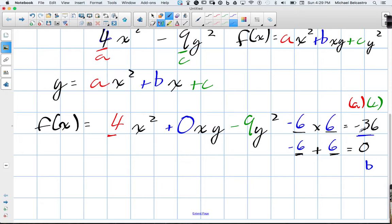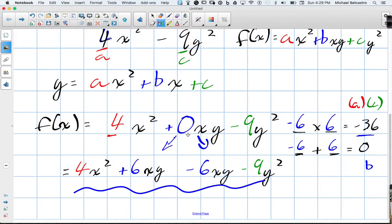So those are my two decomposition terms now. So we're going to split this middle value into negative 6xy and positive 6xy. So we still have 4x squared. The b value, or the 0, is now positive 6xy and negative 6xy. And we still have our subtracted by 9y squared.